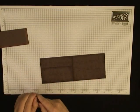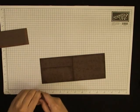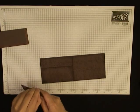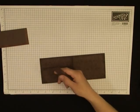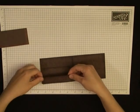Then take a smaller piece and do the same thing. Again, you're going to line up the outside edge and the bottom edge.